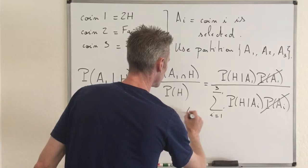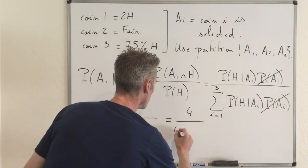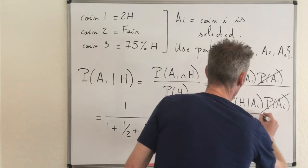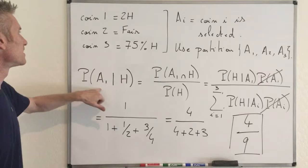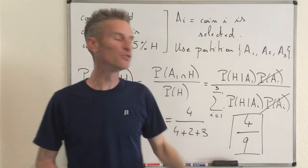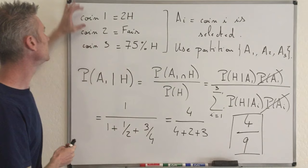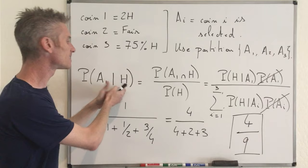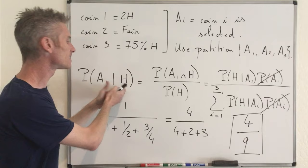So now you can simplify. Multiplying top and bottom by 4, you get 4 divided by (4 + 2 + 3), which gives 4/9. The probability that coin 1 was chosen given that we see heads is 4/9. Notice that it's larger than 1/3 — which would be the probability of choosing coin 1 with no extra information. Given that you observe heads, it increases the probability that coin 1 was chosen, and indeed 4/9 is strictly larger than 1/3.